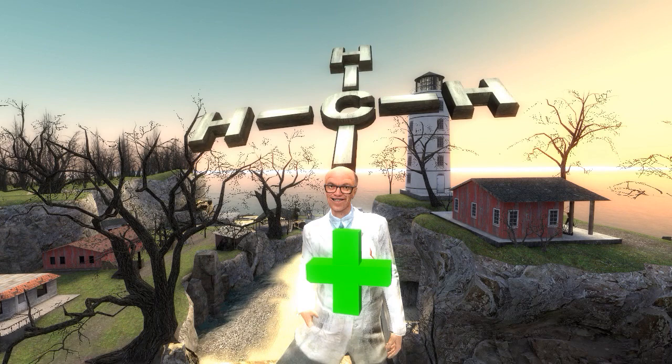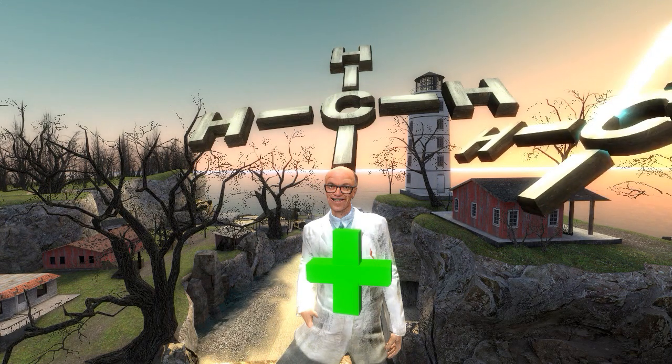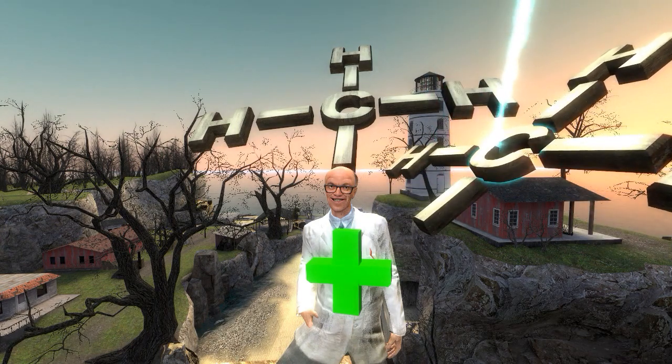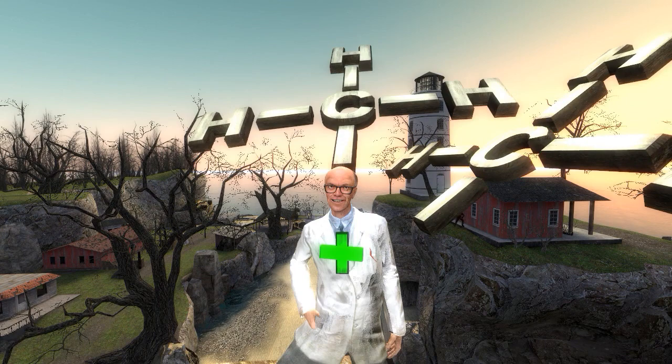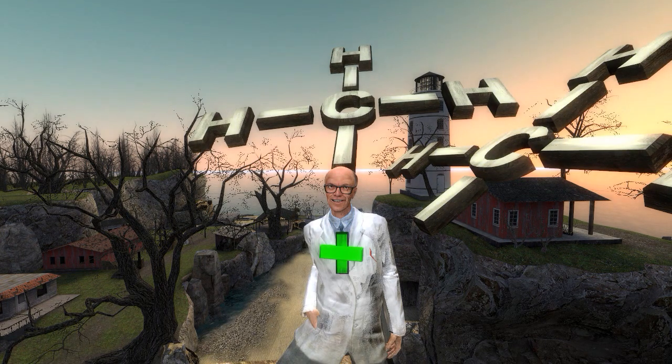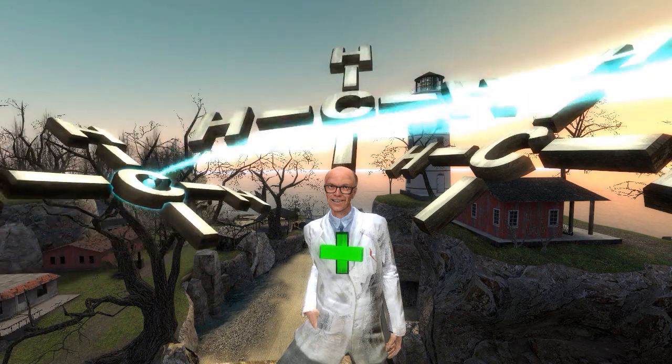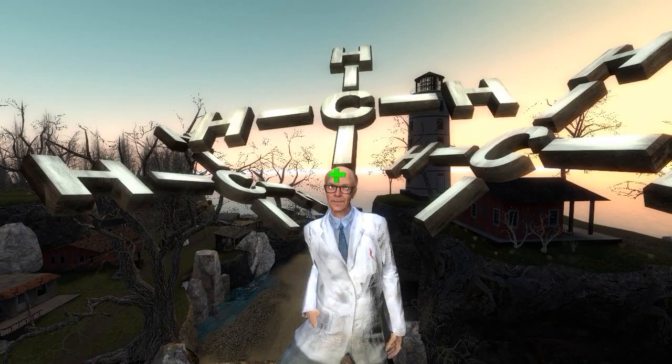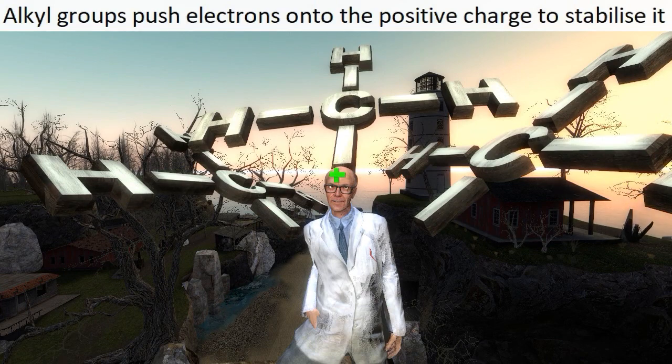Adding a second alkyl group now making a secondary carbocation, Dr. Atkinson becomes again a little more stable and the positive charge is further diffused. By turning him into a tertiary carbocation, he now becomes really quite stable indeed and that positive charge has been further diffused. These alkyl groups have what's called a positive inductive effect on the positive charge, making it more stable. More alkyl groups equals more stability.